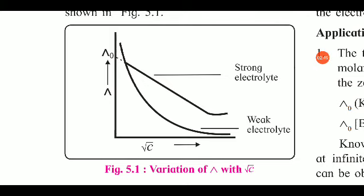For weak electrolytes, the curve increases exponentially. One important observation is that the curve for weak electrolytes does not touch the y-axis. This is because weak electrolytes do not dissociate 100%, so we cannot get a perfect value on the y-axis. The curve goes parallel to the y-axis but never touches it, meaning we cannot get the exact lambda zero value for weak electrolytes.